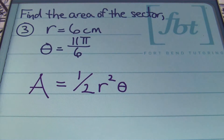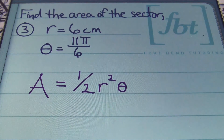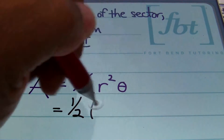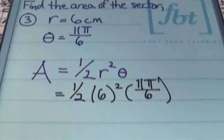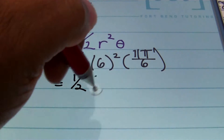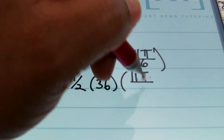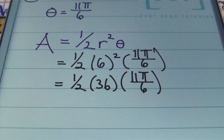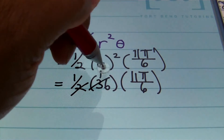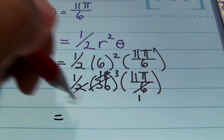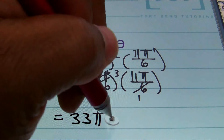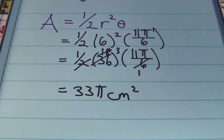Problem number three: find the area of the sector. We have a radius of six centimeters and theta is in radians — it's 11π over 6. We'll use the first formula since theta is in radians. Plugging in: one-half times 6 squared, times 11π over 6. Simplifying: one-half times 36 times 11π over 6. Then 2 goes into 36 eighteen times, and 6 goes into itself once and into 18 three times. Multiplying straight across gives 33π centimeters squared — that's your exact answer for problem three.